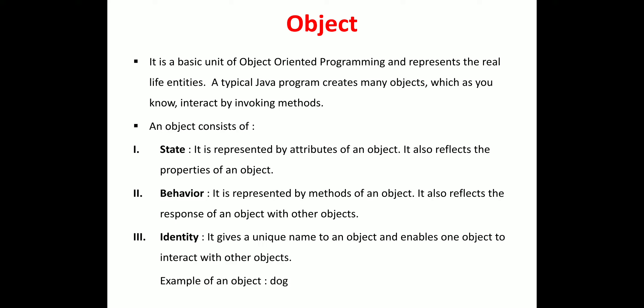The first component is state. State is represented by the attributes of an object and reflects the properties of the object. For example, taking a pen as an object — the property of a pen is writing. So the object name is pen and its property, or state, is writing.